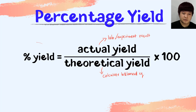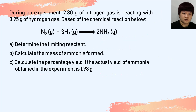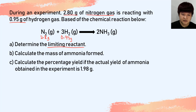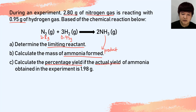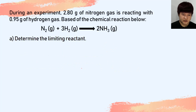On the screen I have 2.8 g of nitrogen gas reacting with 0.95 g of hydrogen gas. We are looking for: the limiting reactant, the mass of ammonia formed (ammonia is the product), and the percentage yield when the actual yield given is 1.98 g. We know the actual yield is your experimental or lab result.